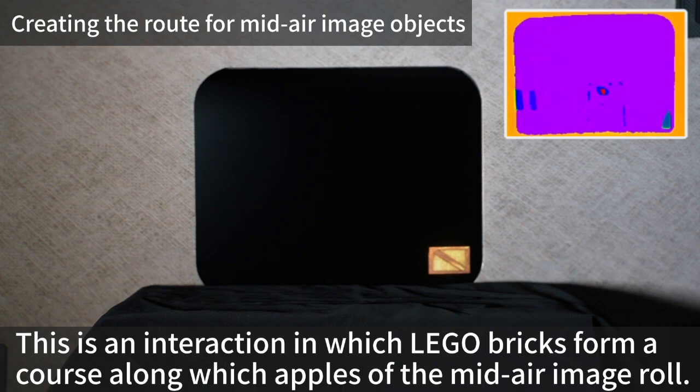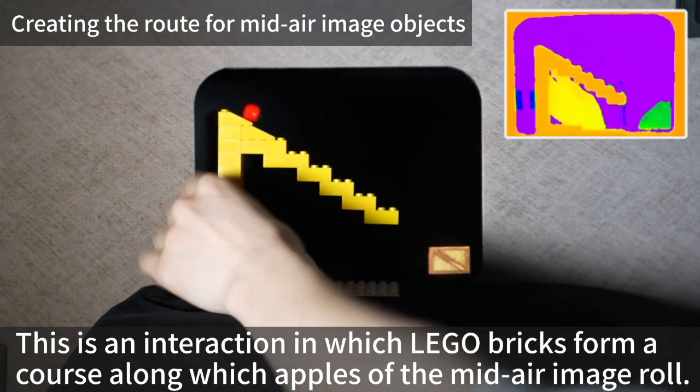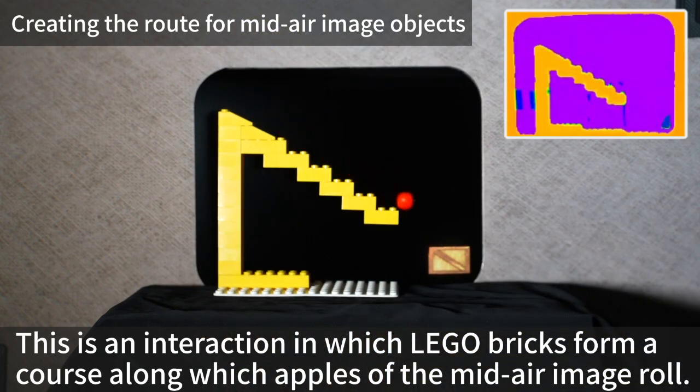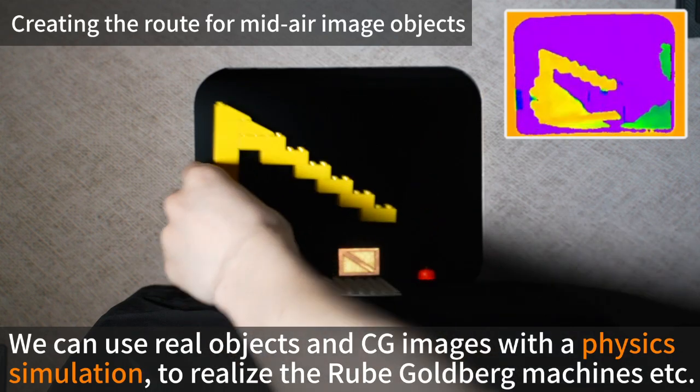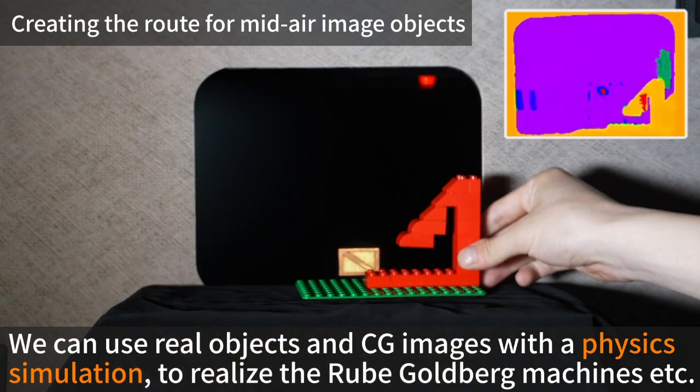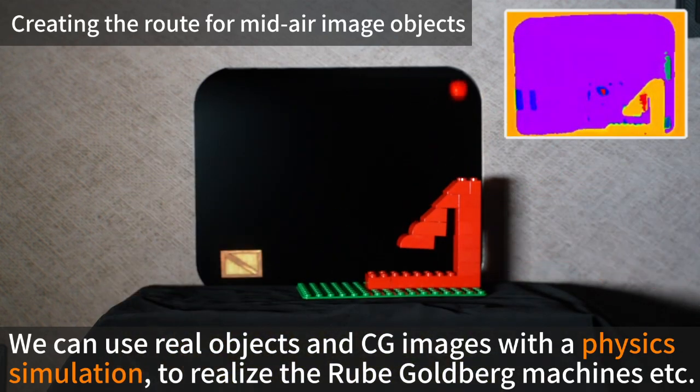This is an interaction in which Lego bricks form a course along which apples of the midair image roll. We can use real objects and CG images with a physics simulation to realize the Rube Goldberg machines.